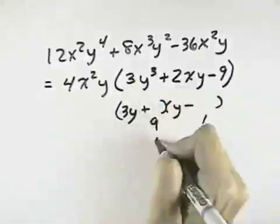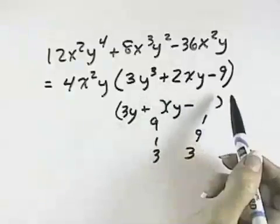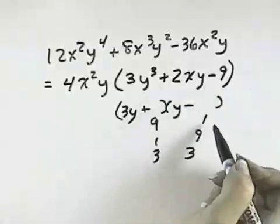We try the combinations of 9 and 1, 1 and 9, and 3 and 3. It ends up none of them will give us a positive 2xy in the middle, and those are the only possibilities.